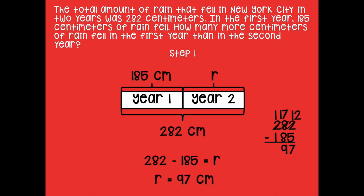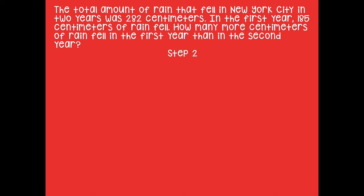We're not done yet — we still have step 2. Step 2 asks: how many more centimeters of rain fell in the first year than in the second? Go ahead and pause the video and draw a model using the RDW process for this second part of the problem. Use the same strategy as before — I'll be using the tape diagram.